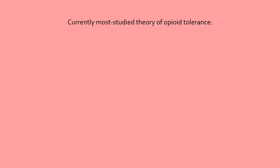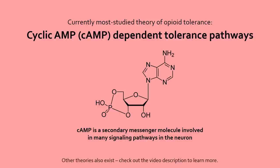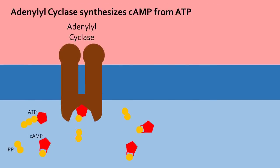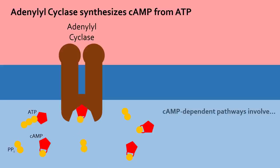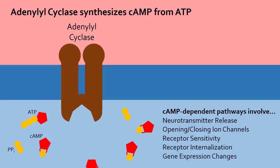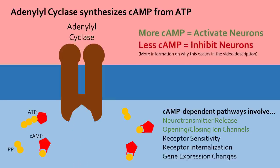In this video, we will focus on the most well-studied theory of opioid tolerance, which involves the secondary messenger cyclic AMP, or cAMP. As discussed in Part 1, the enzyme adenylyl cyclase synthesizes cAMP from ATP. There are many cAMP-dependent pathways in the neuron, such as those that regulate neurotransmitter release, ion channels, receptor sensitivity and internalization, and gene expression. In a very simplified view, cAMP makes neurons more likely to depolarize and release neurotransmitters — more cAMP activates neurons while less cAMP shuts them off.